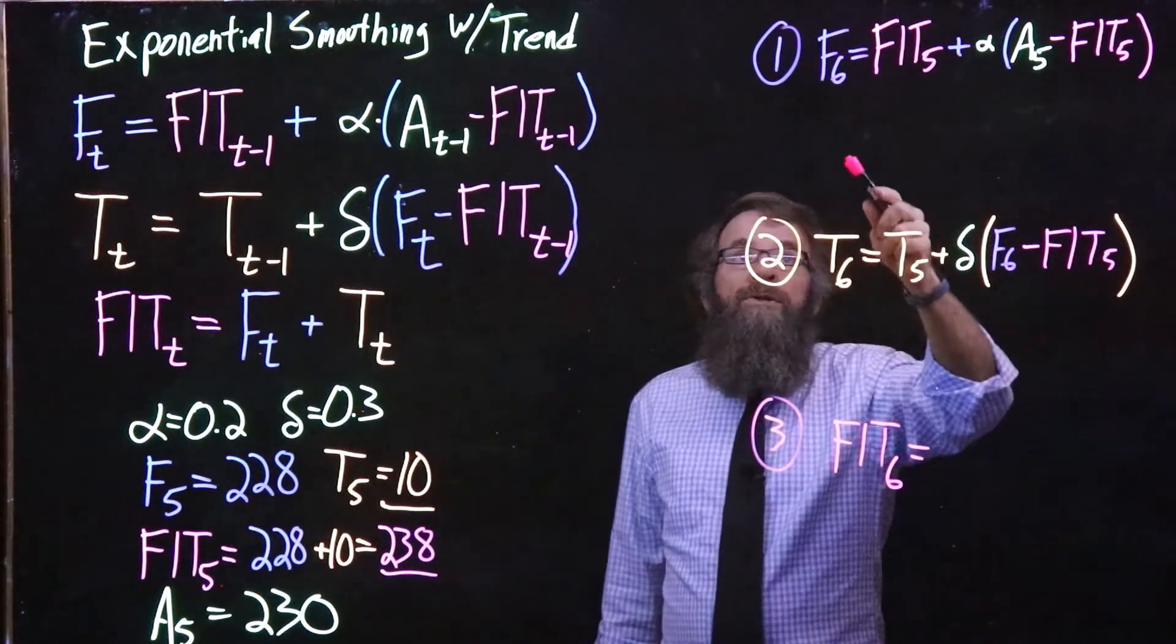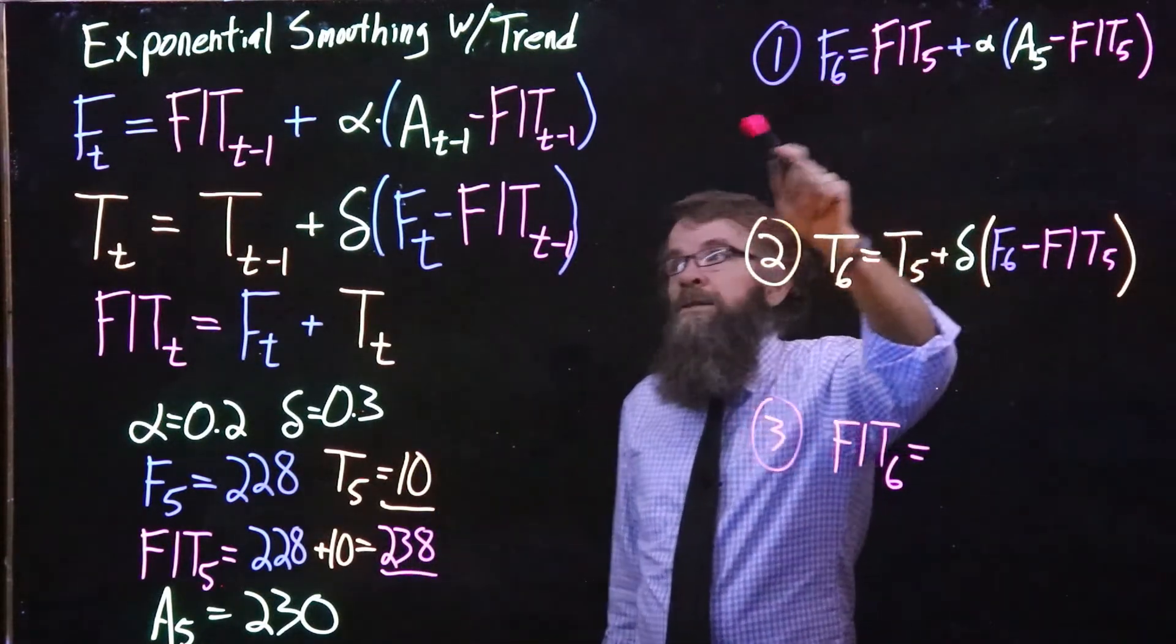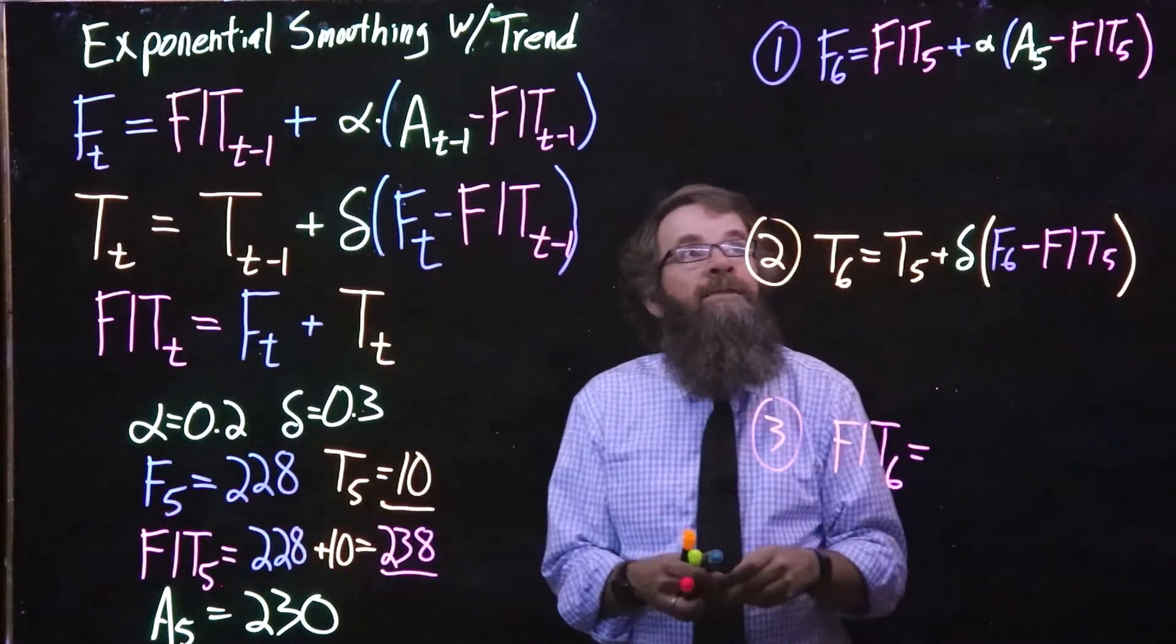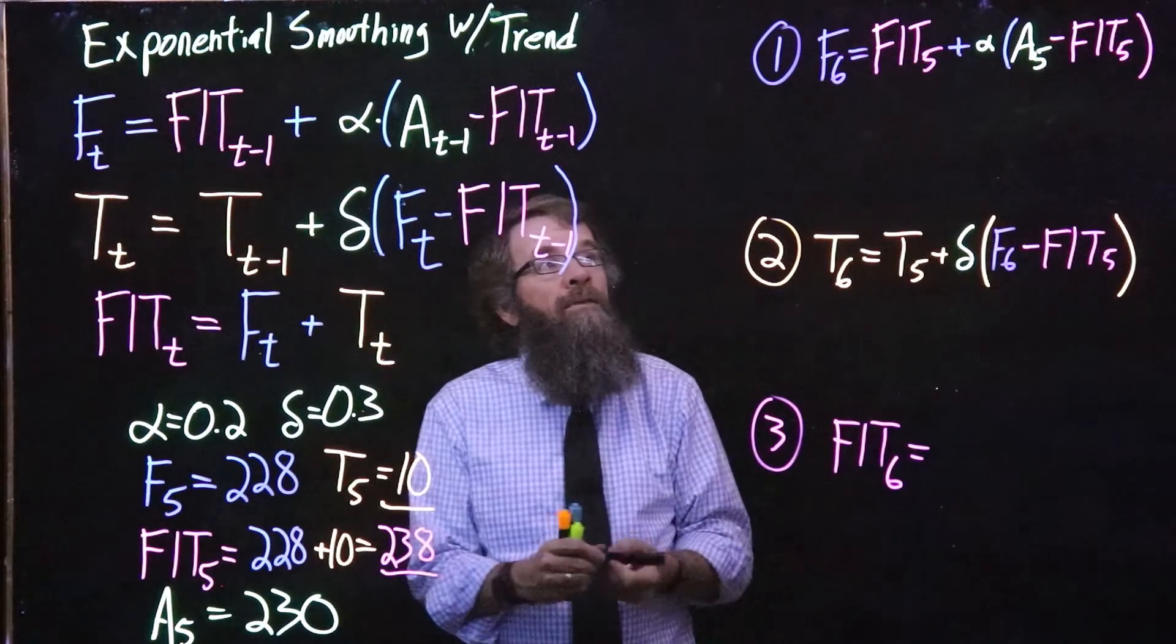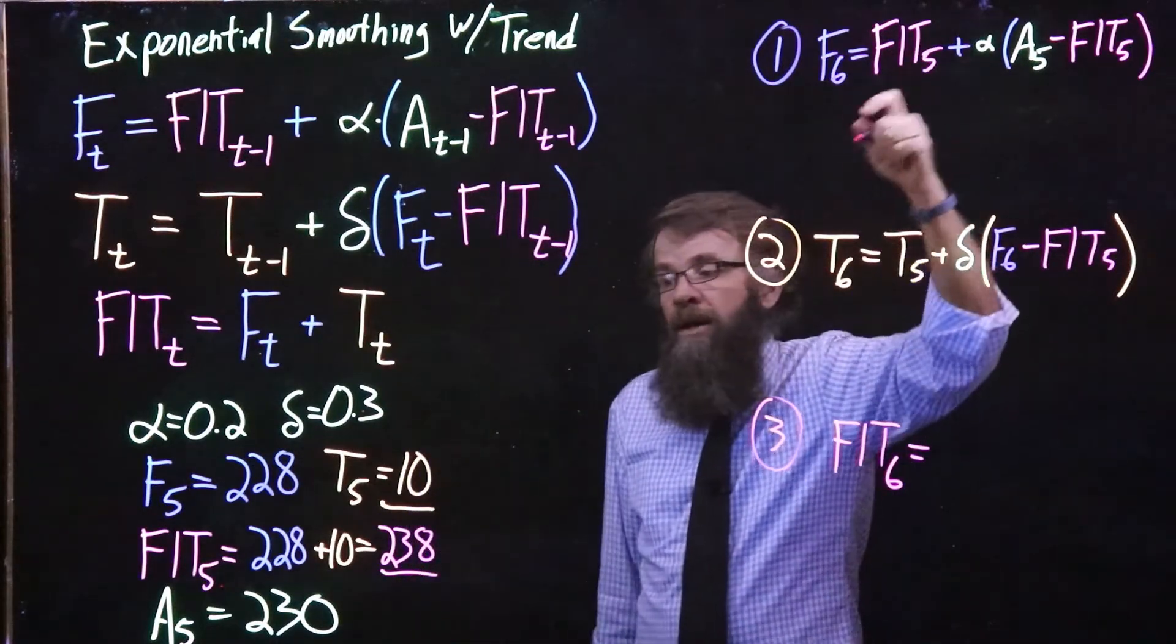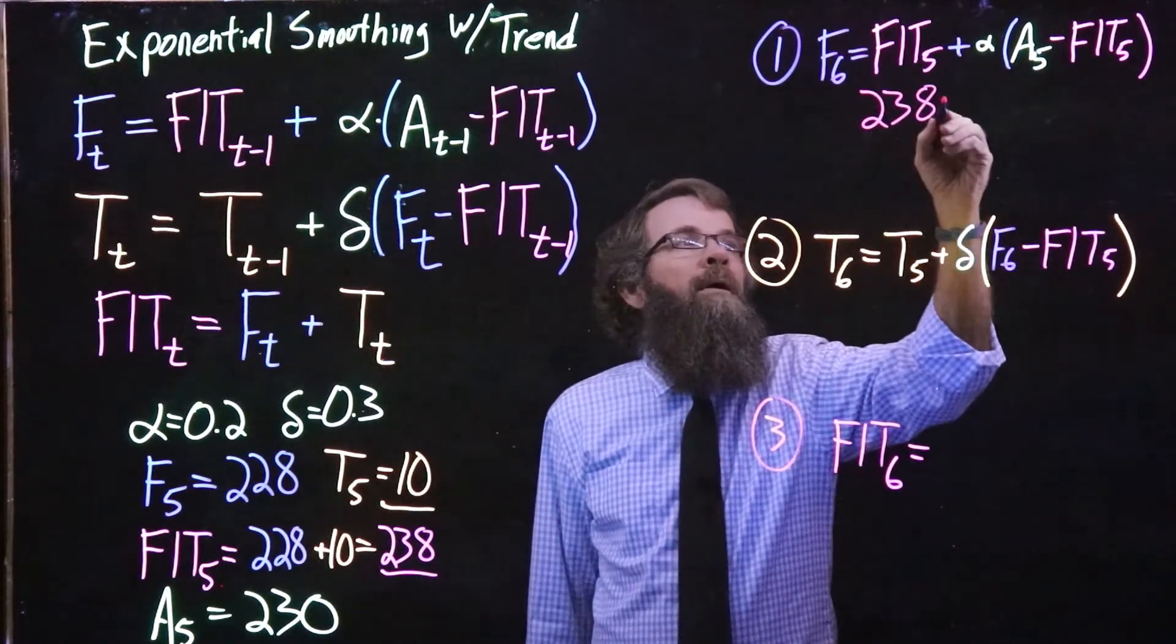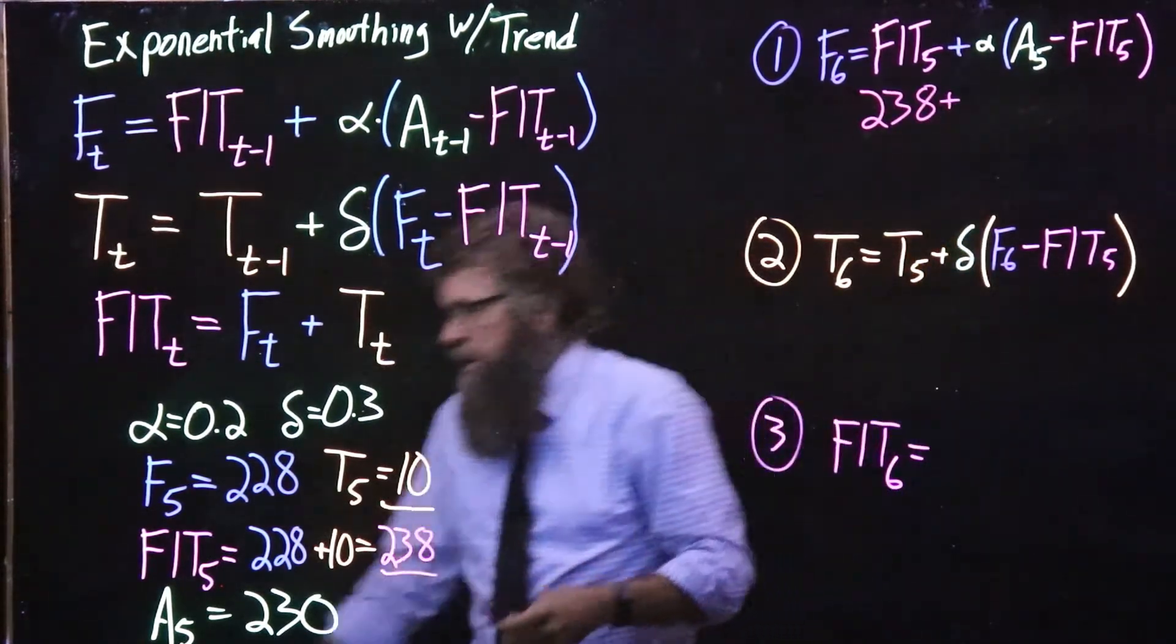So we start out with the level F, and since we have F5 from the last period, now we're going to be calculating F6. And so to do that, we need the forecast including the trend from period 5, and that was, we saw down here, 238, and then we need to add on to that alpha.